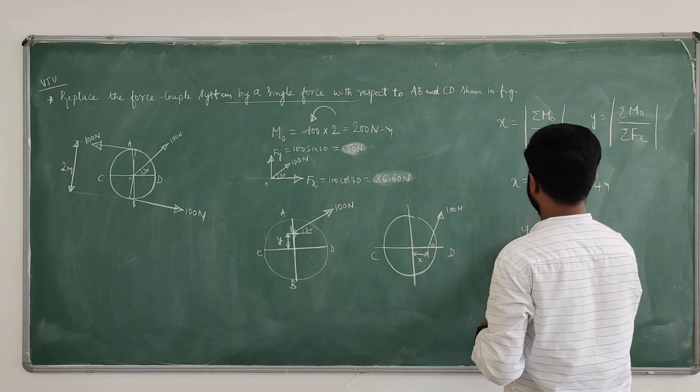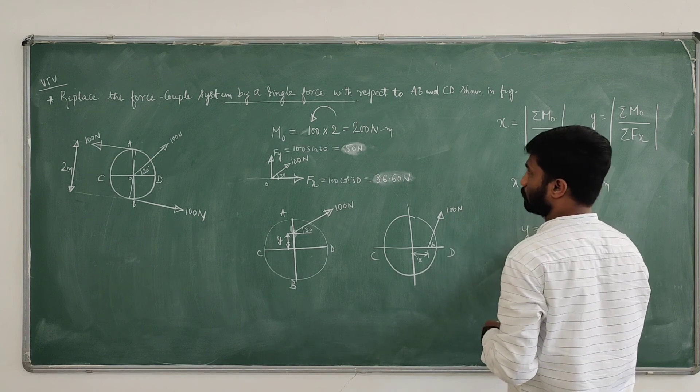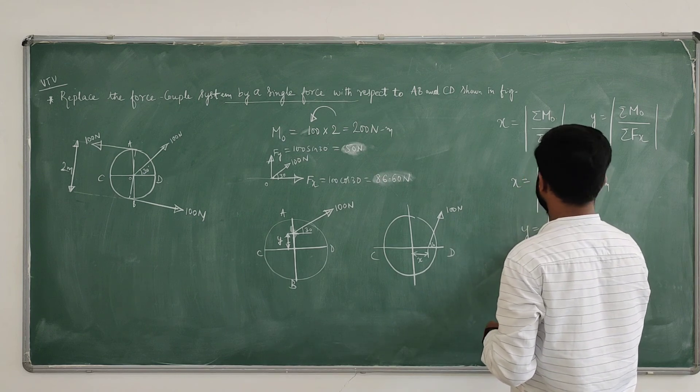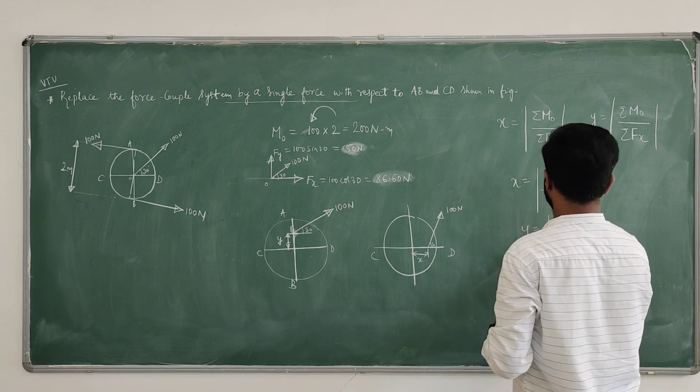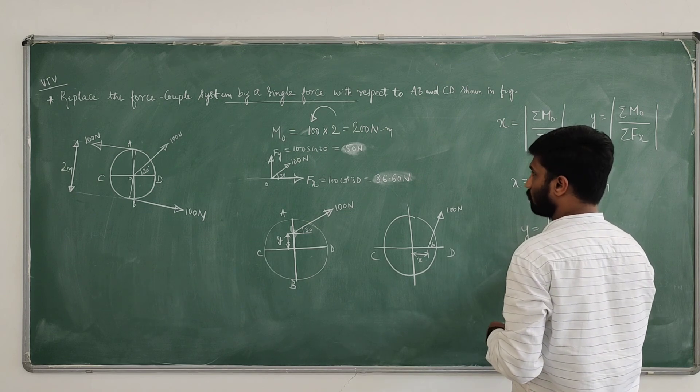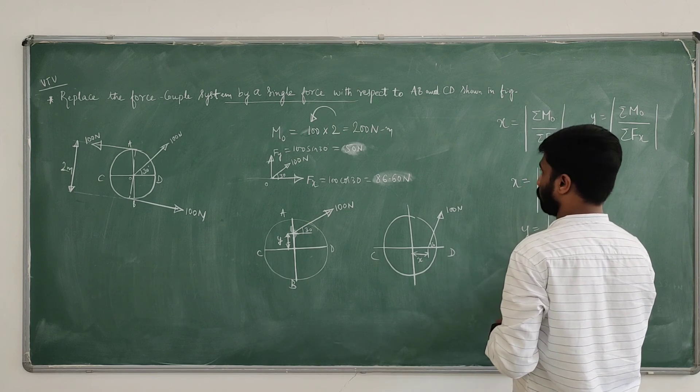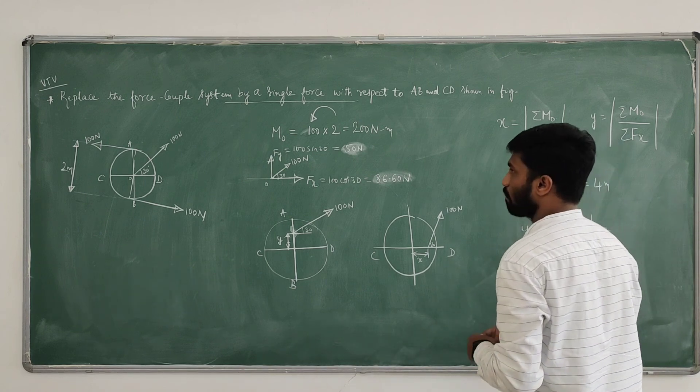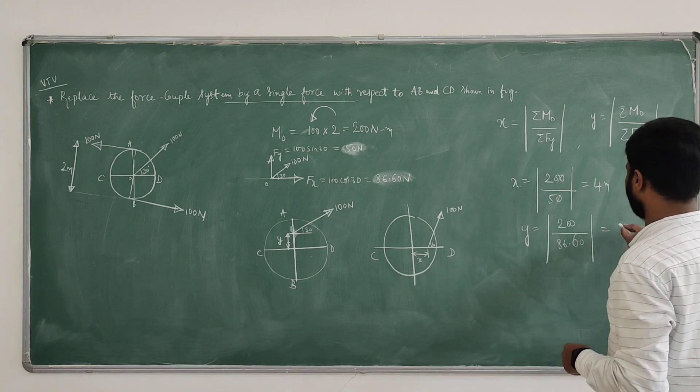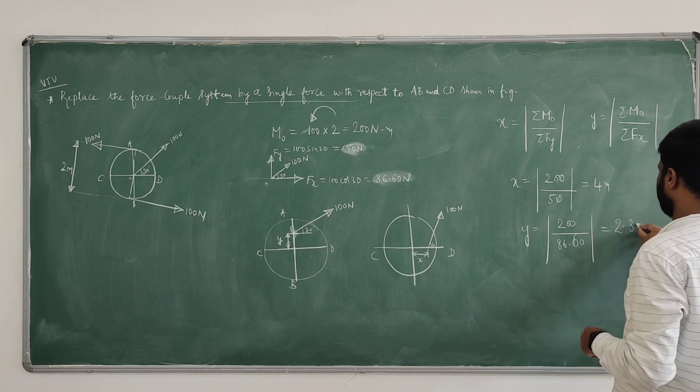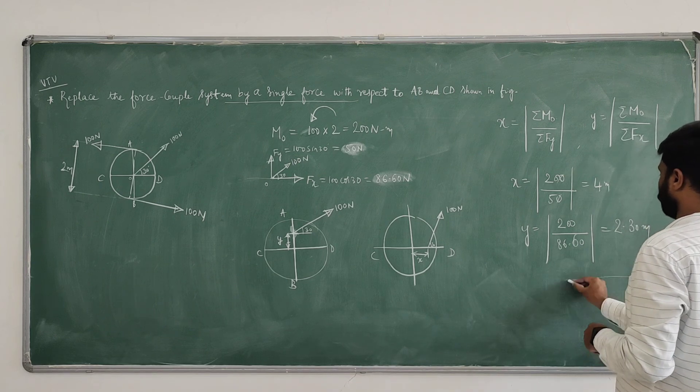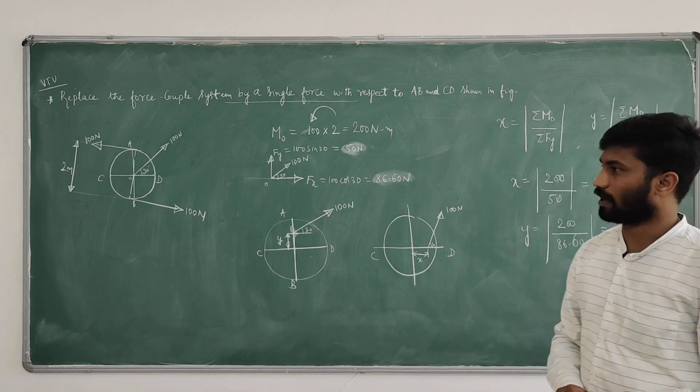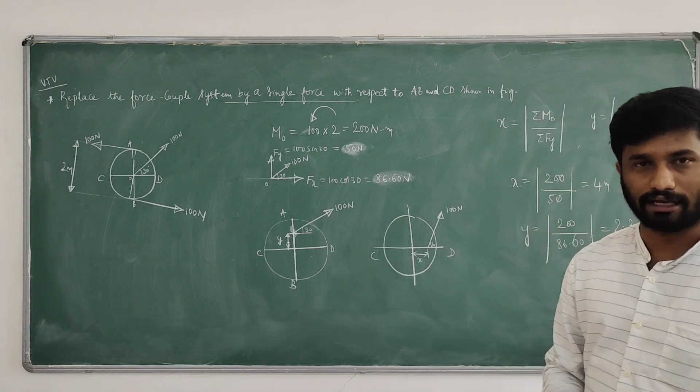Similarly, Y equals integral of sigma M naught, 100 into 2, 200 divided by sigma Fx is 86.06. How much? 2.30, 2.303 meters. This is X intercept and Y intercept values. Thank you.